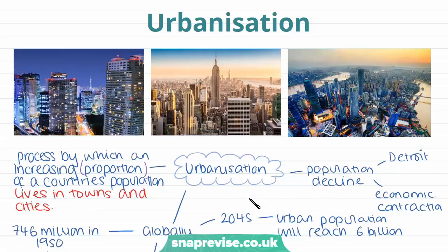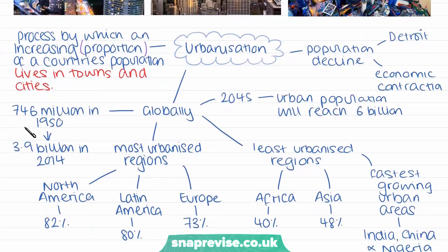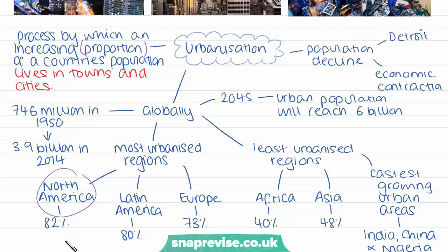The trends we have seen since 1945 is that the urban population globally has grown rapidly from around 746 million people in 1950 to 3.9 billion people in 2014. The most urbanised regions of the world are typically our most developed regions, which include North America having 82% of their population living in urban areas in 2014, and Latin America and the Caribbean having 80%.